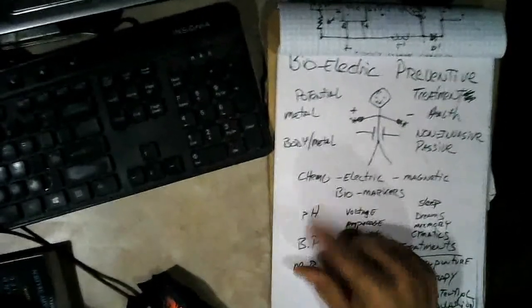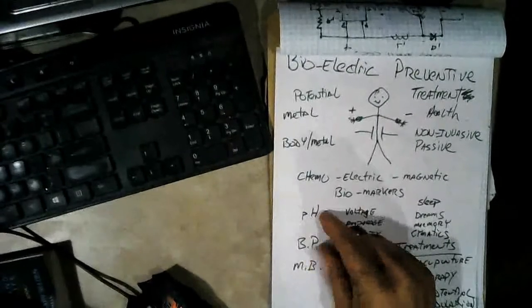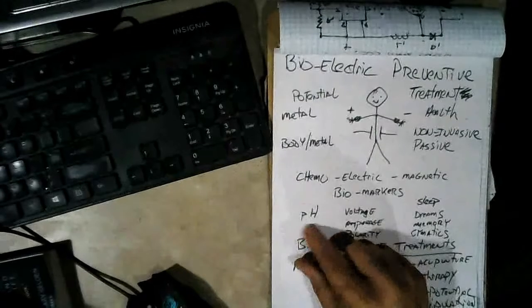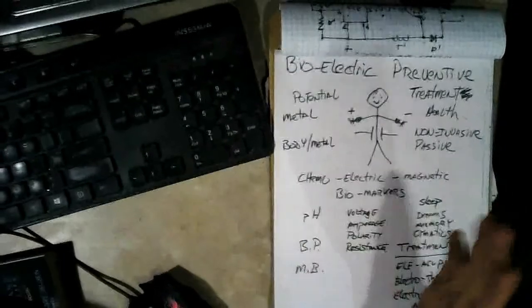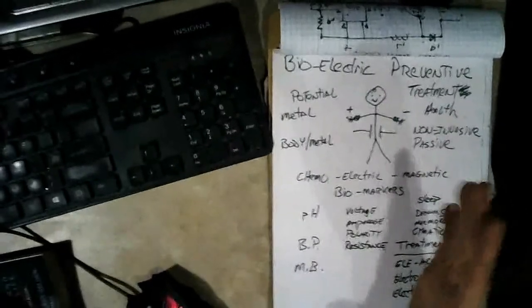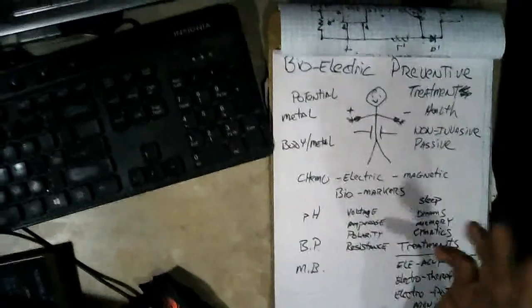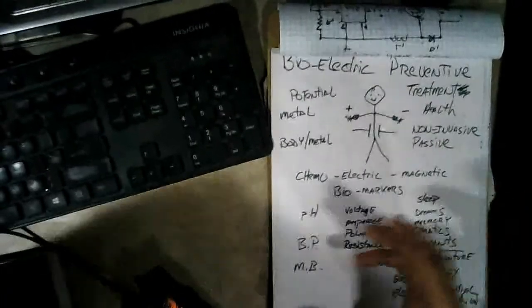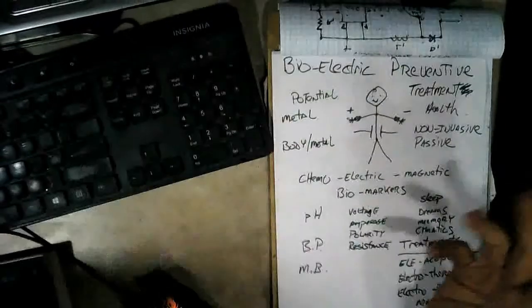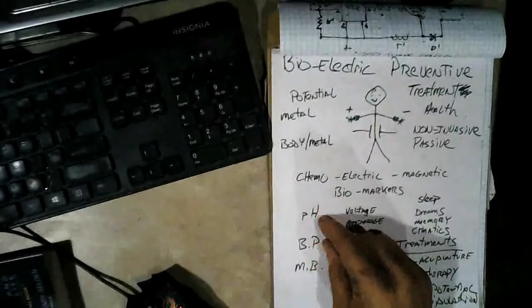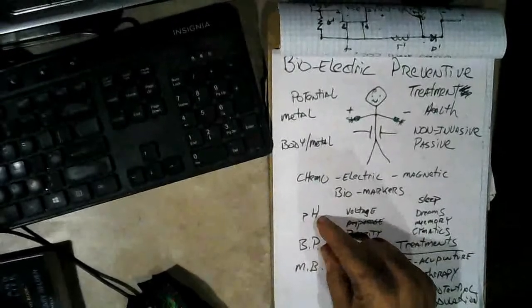On the chemical side of it, there's only really one really good biomarker of health, and that's the pH. Our bodies, chemically, are designed to operate around neutral pH. If your pH goes too far above that or too far below that, you get sick. So there's only one really good physical, chemical biomarker that we can use.